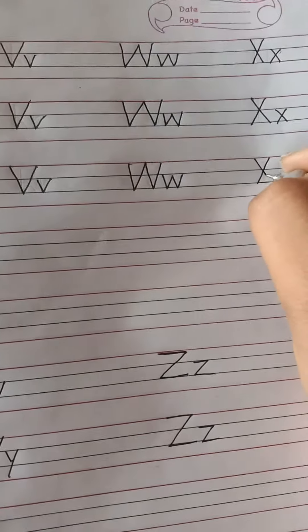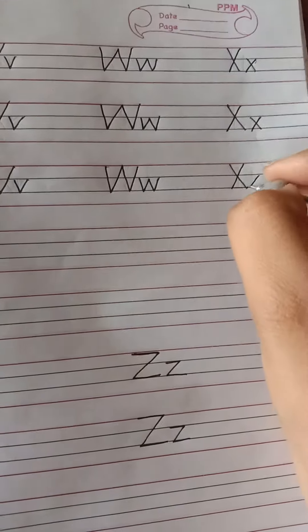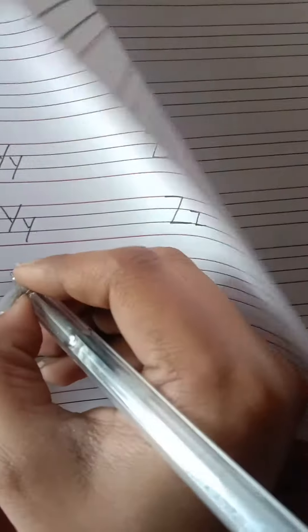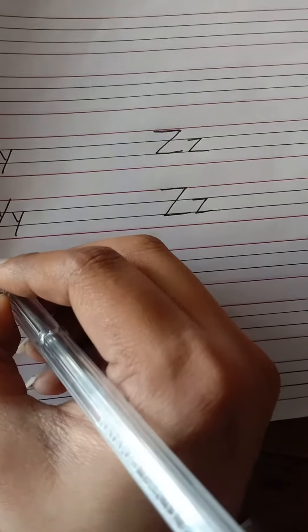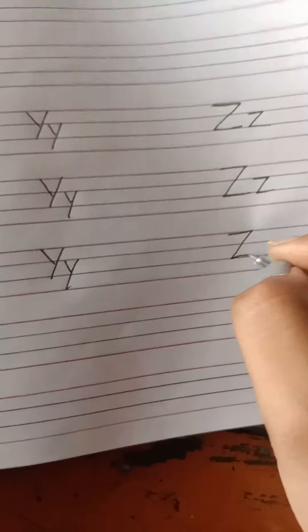Capital X. Cross. Small x. Okay? This is Y. Sliding and sliding. Y for yuck. Small y. Z for zebra. Okay?